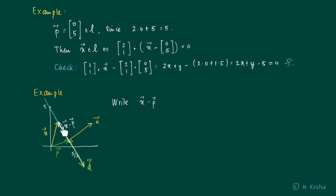So x minus p can be written as a multiple of d. And in this picture, the t that belongs to the description will be negative, since it's pointing the other way than the direction vector d.